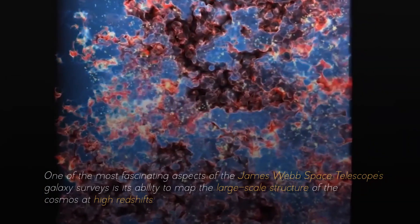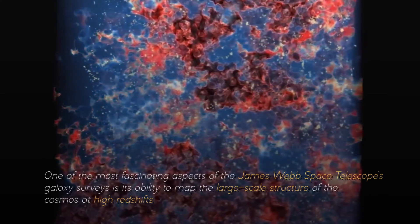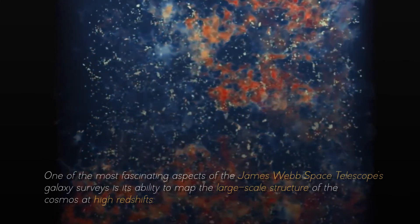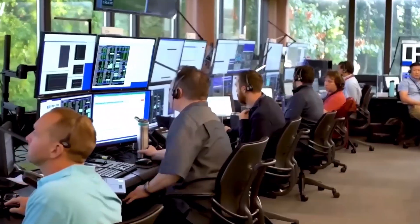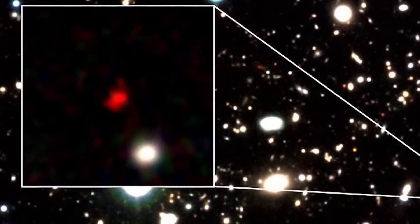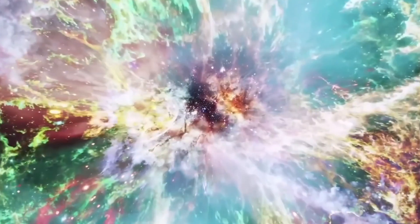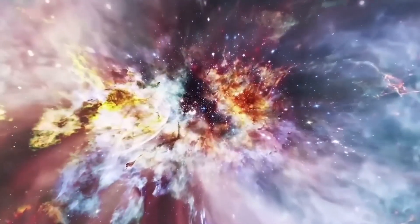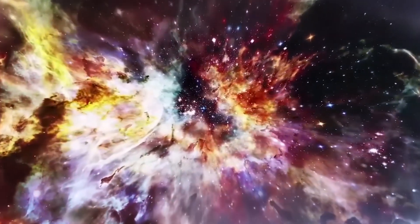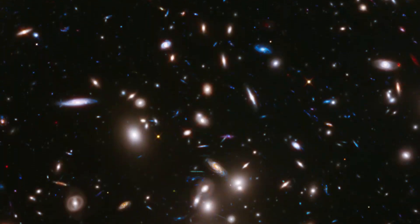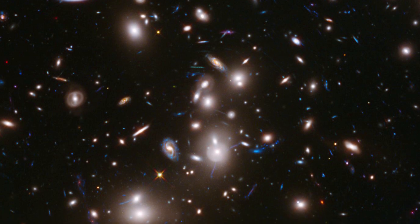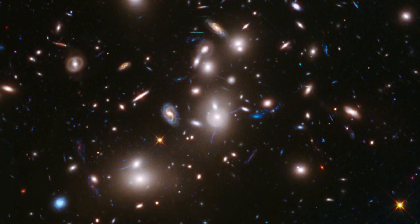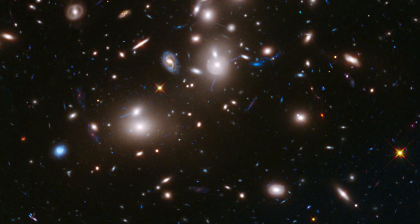One of the most fascinating aspects of the James Webb Space Telescope's galaxy surveys is its ability to map the large-scale structure of the cosmos at high redshifts, when galaxies were still young and grouped into large clusters known as protoclusters. These protoclusters are the predecessors of today's galaxy clusters, which are the largest gravitational structures in the universe. By studying these protoclusters, we can learn about the interactions between galaxies, their interactions with their surroundings, their growth and merger, and how they influence the formation of stars and planets.